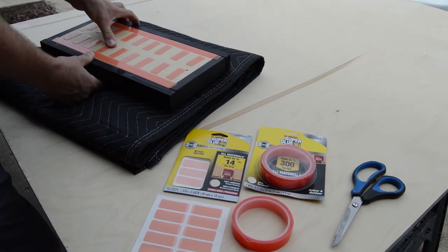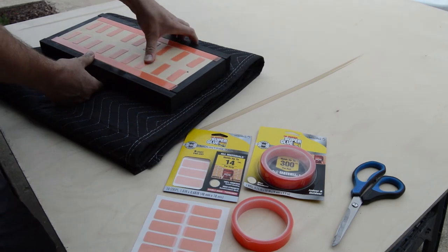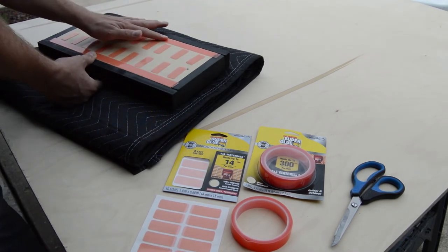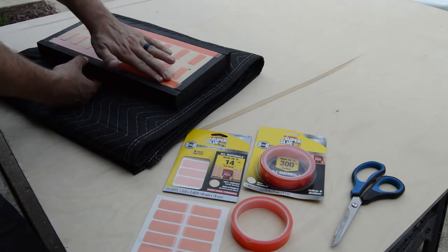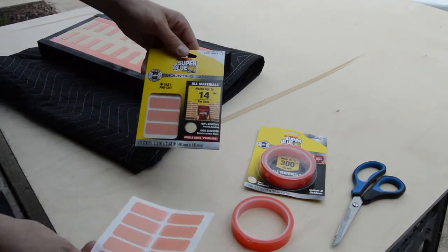When you apply the tape, make sure you do not touch the adhesive part with your fingers. The next step is press the tape firmly, which you're watching me do here, and remove the protective film.